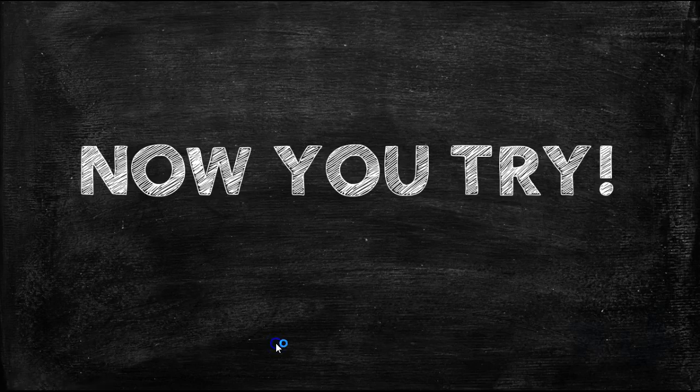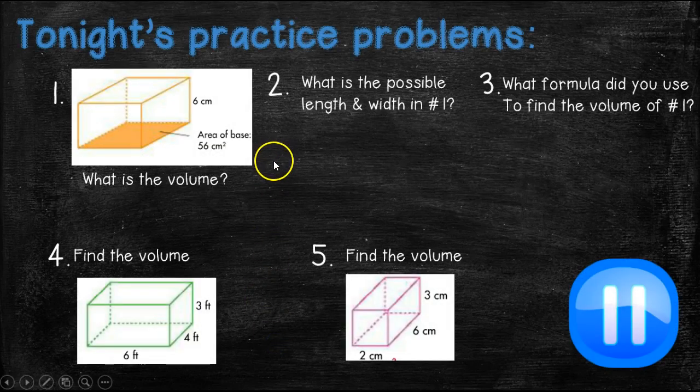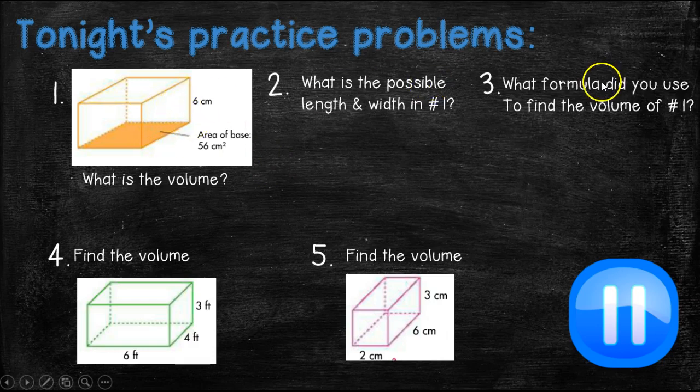Now it's your turn to try. So for tonight's practice problems, problems number one, two, and three go together. Problem number one is asking you what is the volume? So here we know that the area of the base is 56 centimeters squared. So what would we do to find the volume? Question number two says what is the possible length and width in problem number one? And then number three, what formula did you use to find the volume of number one? And then numbers four and five, you're simply going to use the given measurements to find the volume. Don't forget to label all of these correctly. Go ahead and pause the video and come back when you're ready for the answers.